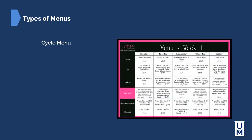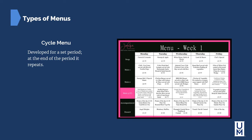A cycle menu is a menu developed for a specific set period of time, and at the end of that period it repeats. This type of menu is often used in institutional settings with a captive audience: hospitals, schools, and prisons.